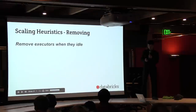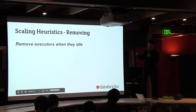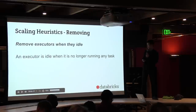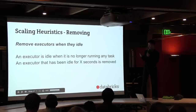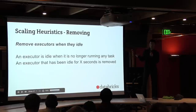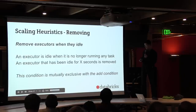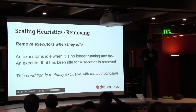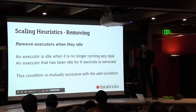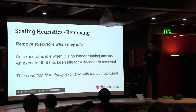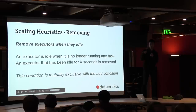The removing story is actually much simpler. We simply remove executors when they're idle — specifically, when an executor is no longer running any task. The condition is triggered when an executor has been idle for some configurable duration. This condition is mutually exclusive in most circumstances with the add condition: when you have idle executors, the number of pending tasks can't be greater than zero, because otherwise the executors would be running those tasks.